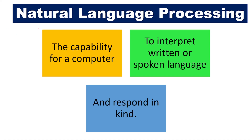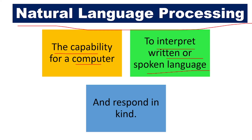Next is Natural Language Processing. What is natural language processing? It is the capability for a computer to interpret written or spoken language. When I am uploading some writings, scriptures, or when I am speaking something, the computer should be able to understand what I have spoken and give me a reply. For example, some devices have come to market where when we speak to them, they give a reply to us. This is possible through Natural Language Processing.